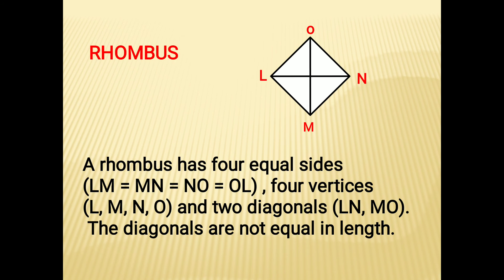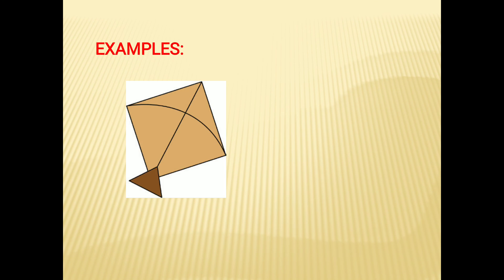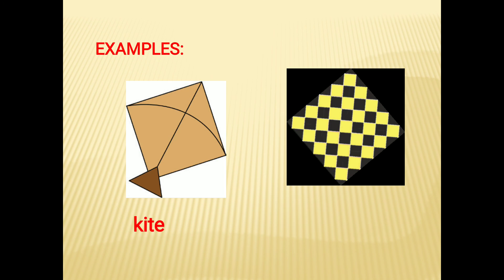So in a rhombus, all four sides are equal but the diagonals are not equal in length. Examples of a rhombus are a kite and a tile.